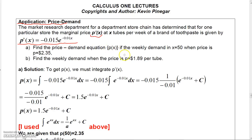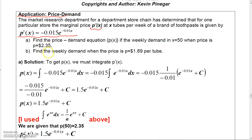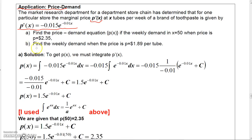Find the price-demand equation P(X) if the weekly demand is X = 50 when the price is $2.35. The price-demand equation is the price function — that's what we're looking for. We're given the derivative of the price function, so to get price we simply need to integrate this function.